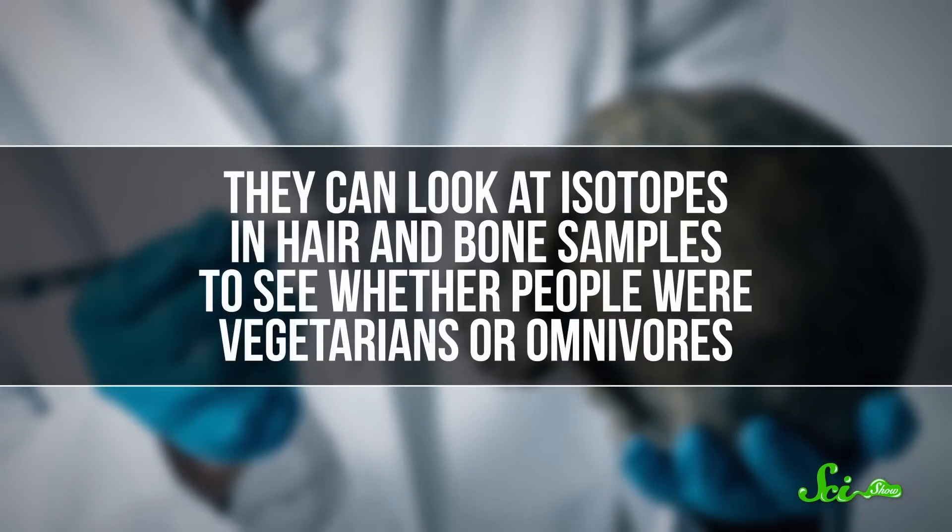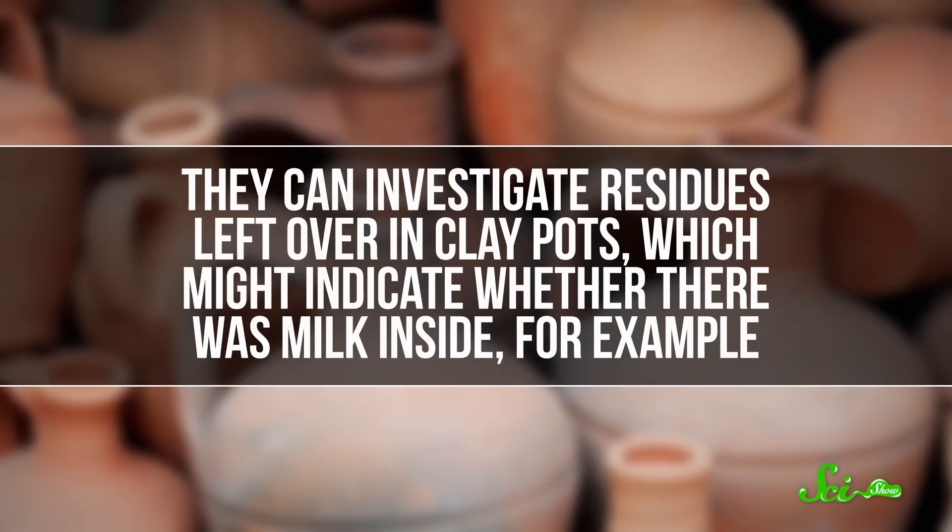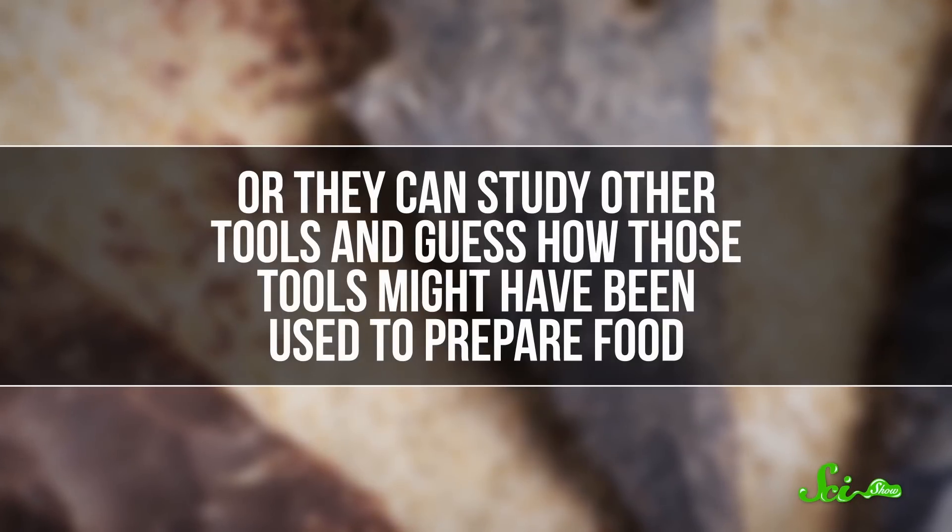Archaeologists have come up with a variety of methods to learn about the food habits of our ancestors. They can look at isotopes in hair and bone samples to see whether people were vegetarians or omnivores. They can investigate residues left over in clay pots, which might indicate whether there was milk inside, for example, or they can study other tools and guess how those tools might have been used to prepare food.